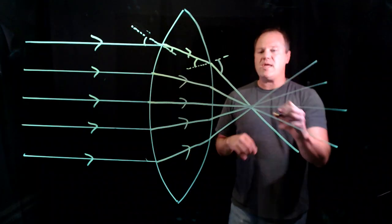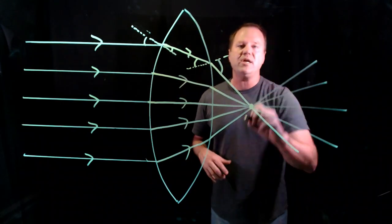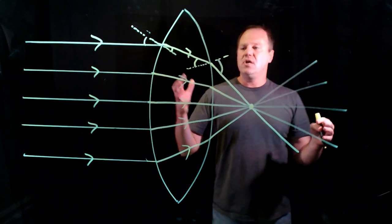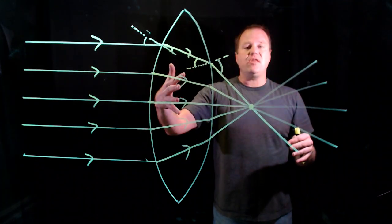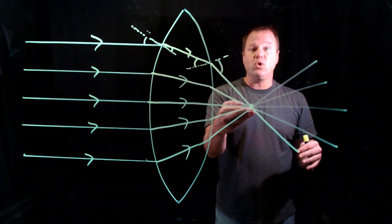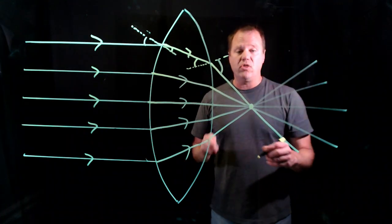So what we end up with for a properly constructed lens is that all of the parallel rays that come in and hit this lens will converge to a single point. And that point is called the focal point.